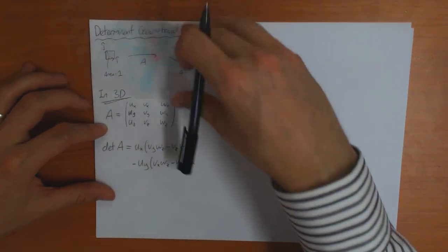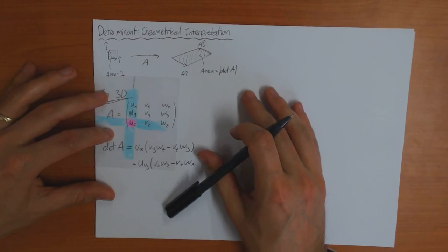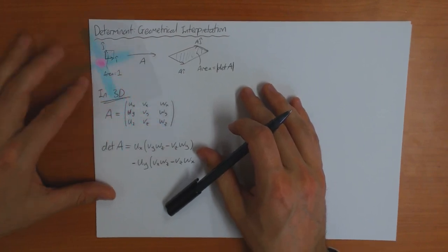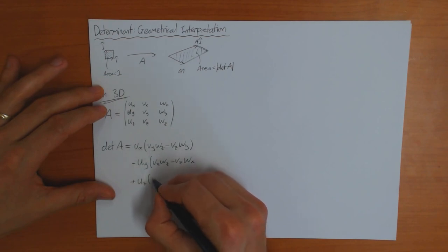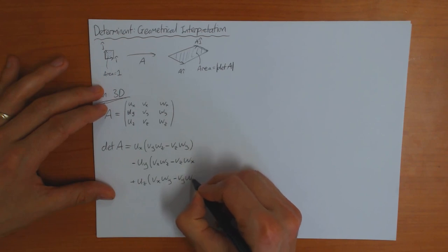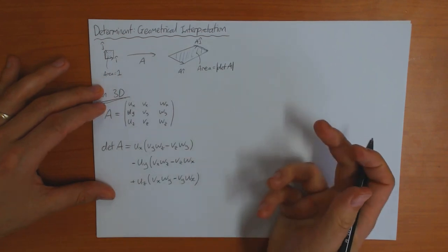And then finally plus this one here, which is VZWY minus VYWX.